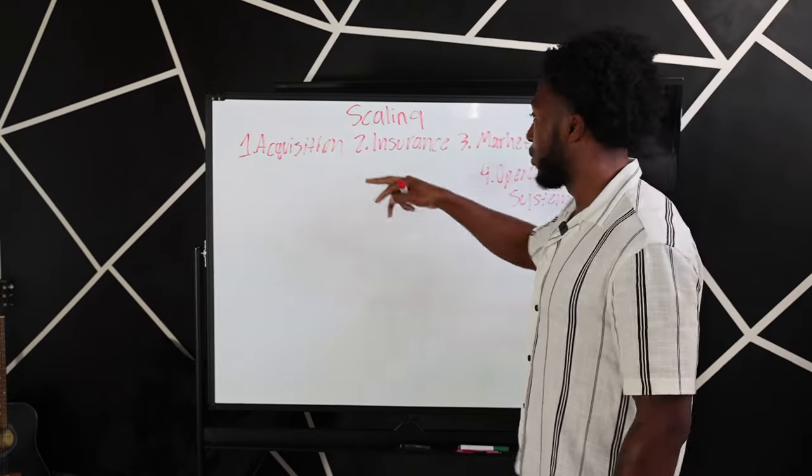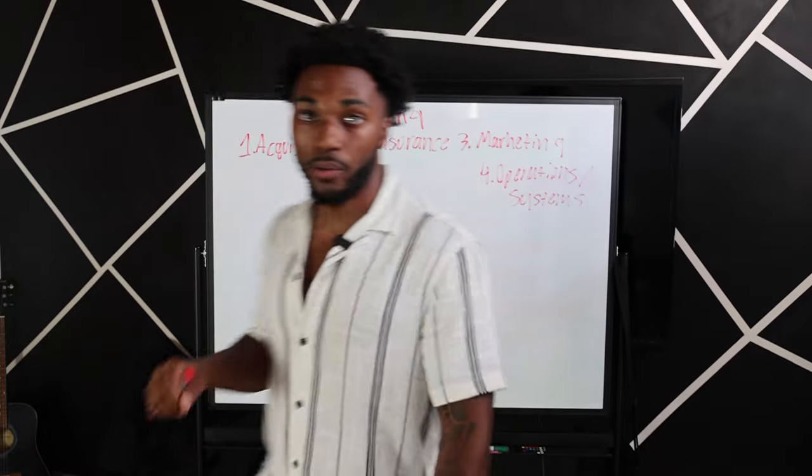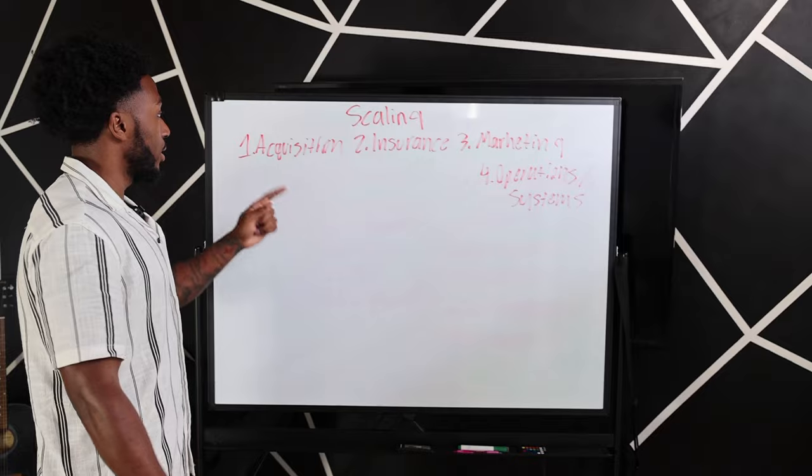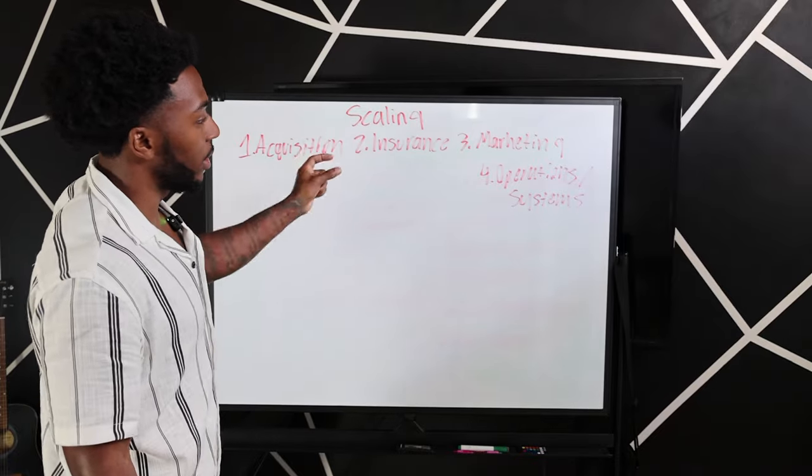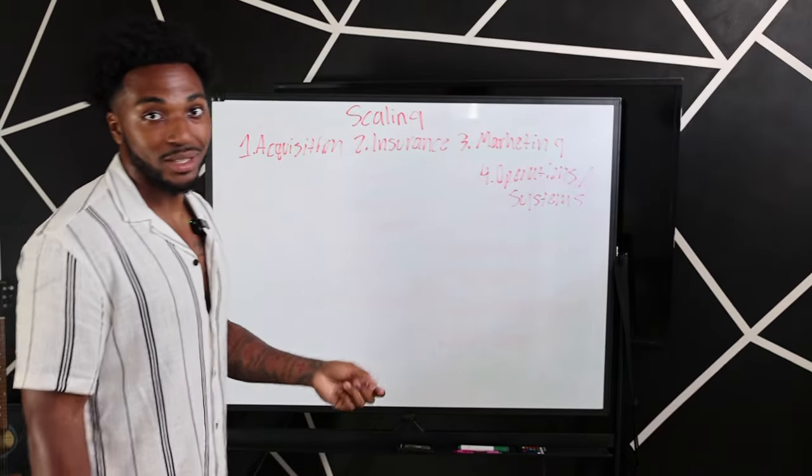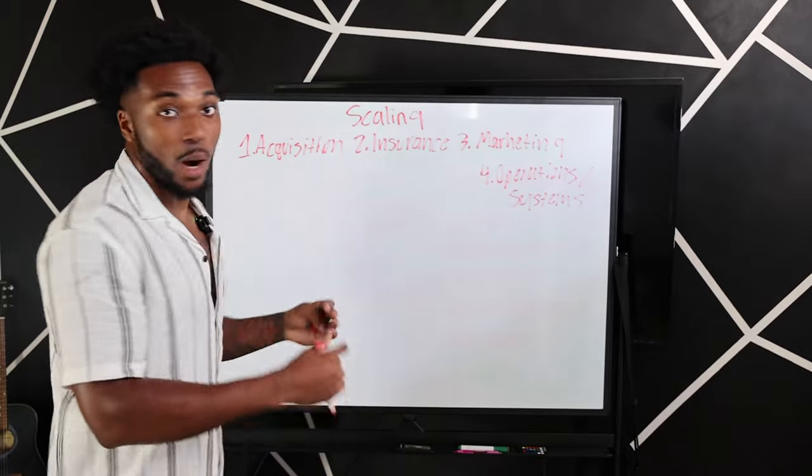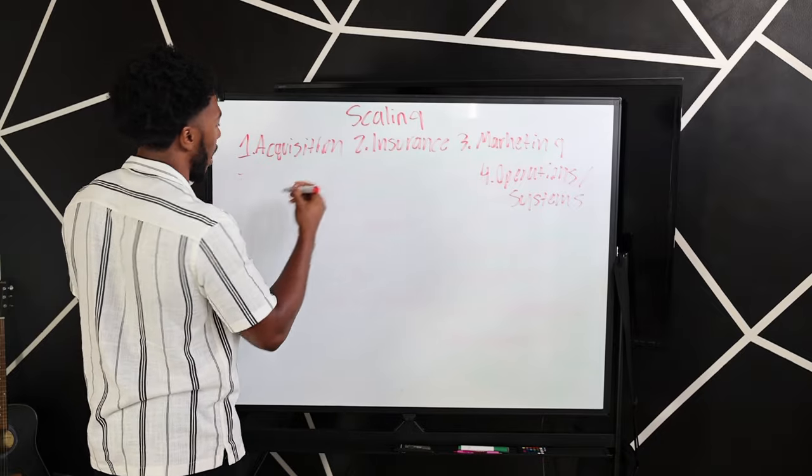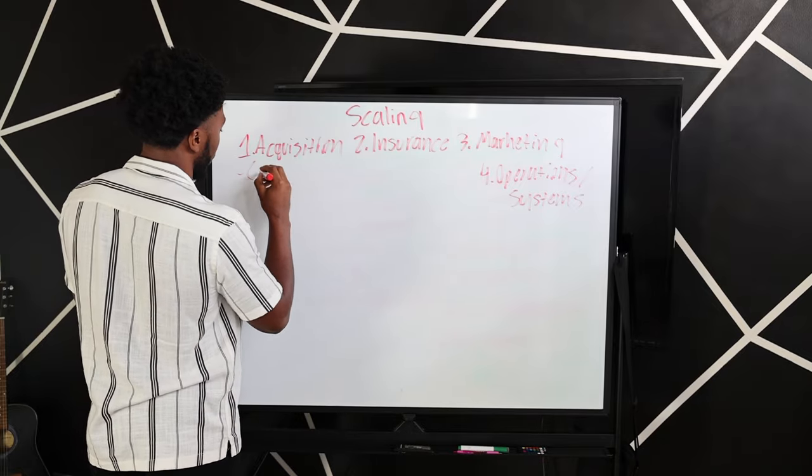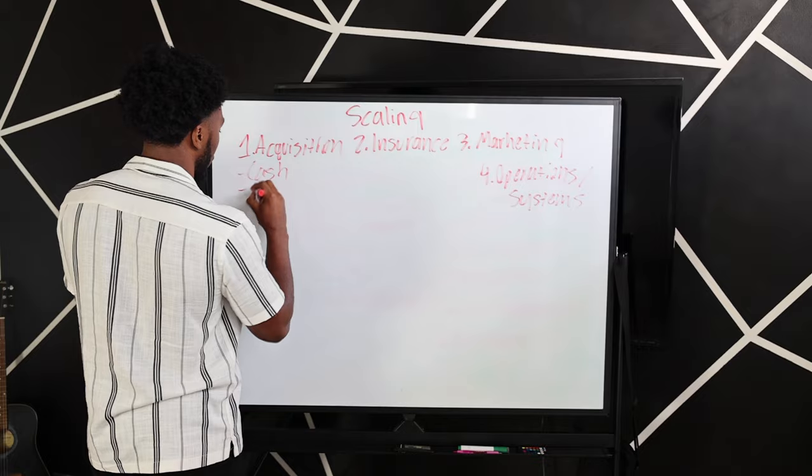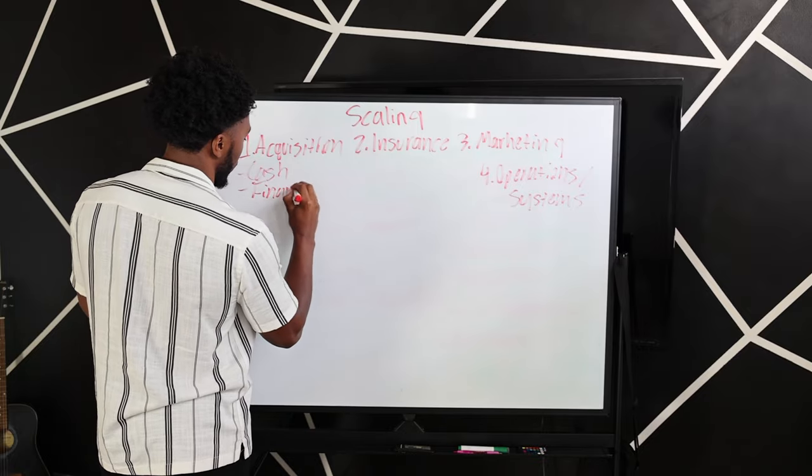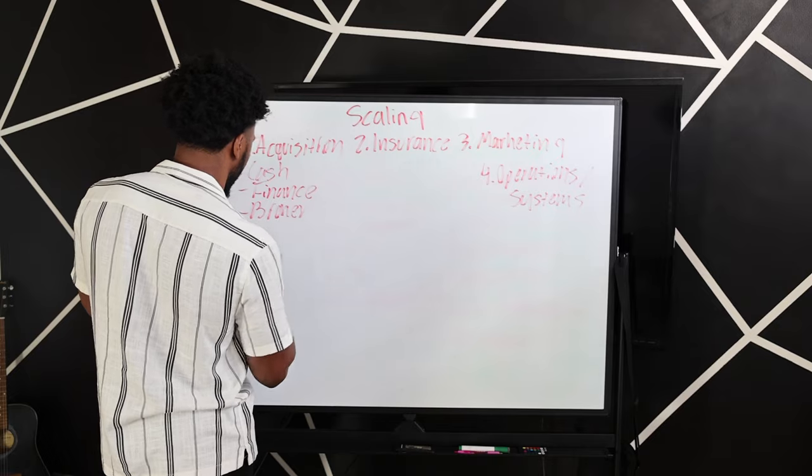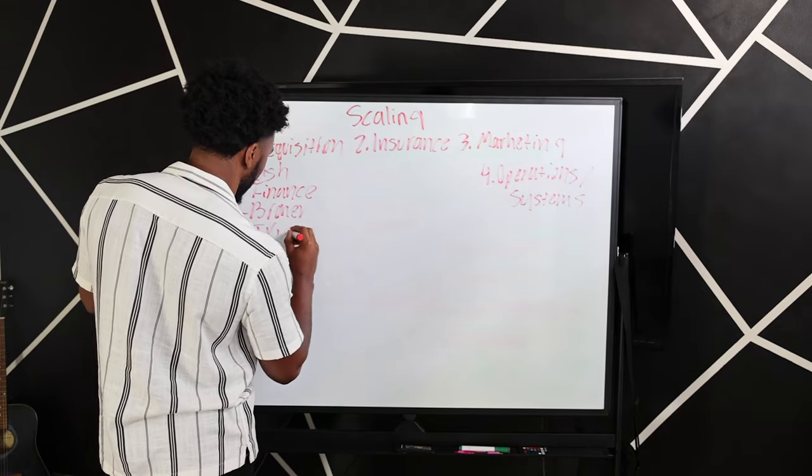If you have a business currently, each and every one of these things you have went through. You already have acquisition, you're already doing insurance, you're already doing marketing, you've already added some operations and systems maybe. So now we're talking about scaling. Let's say currently, I'm going to list a couple of things where you can acquire cars. Let's say you buy some vehicles cash, you can finance some vehicles, you got some brokerage deals you're doing, and some JVs.